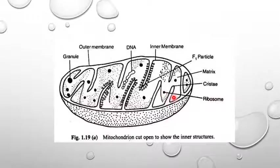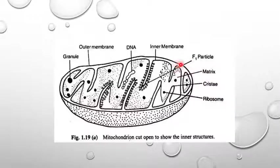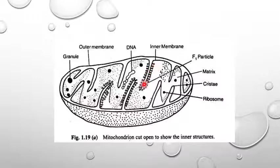This image shows the structure of mitochondria. Mitochondria is a double membrane, spherical or sausage-shaped structure. The outer membrane is smooth, whereas the inner membrane is folded into finger-like projections known as cristae, to increase the surface area for aerobic respiration. They have their own DNA.